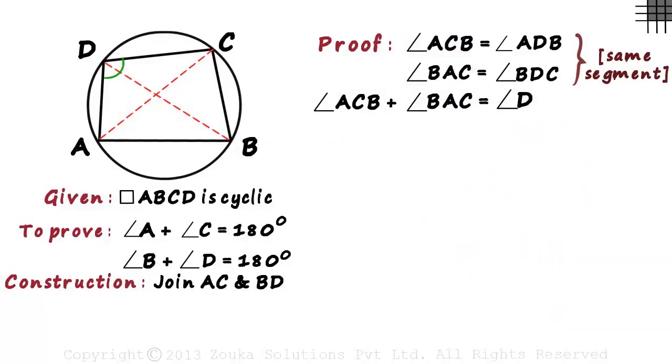It gets even more interesting. Since we are looking for 180 degrees, we have to look for sum of angles of a triangle. Look at the left hand side. It's angle ACB plus angle BAC. This is angle ACB and this is angle BAC.